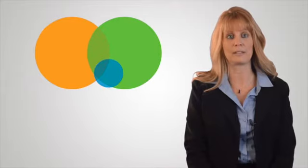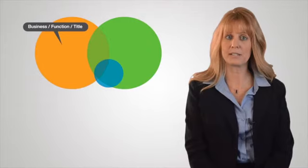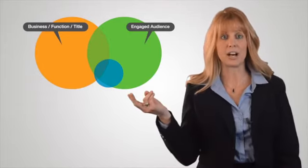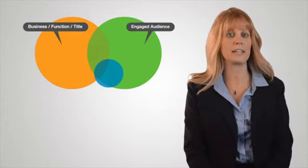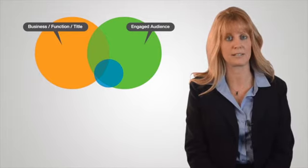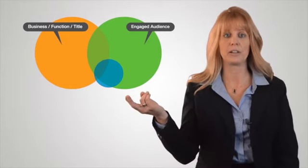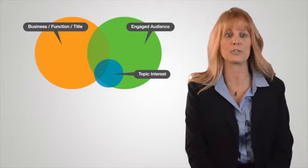CAST offers many ways of selecting and filtering your audience. Let's see what we come up with when we select by the following filters. For example, the orange circle represents basic demographics, which include business function and titles. The green circle is our engaged audience and represents people who have recently opened an email, so this will be a very engaged list.